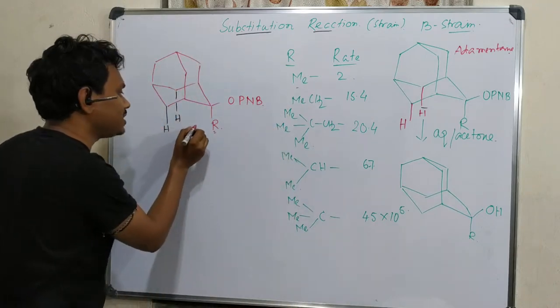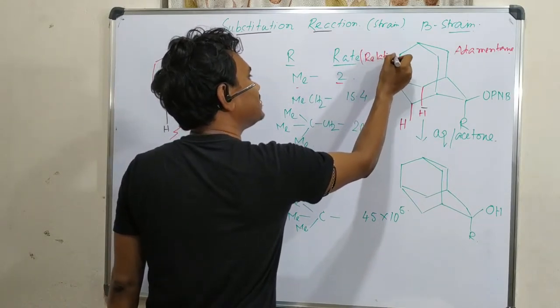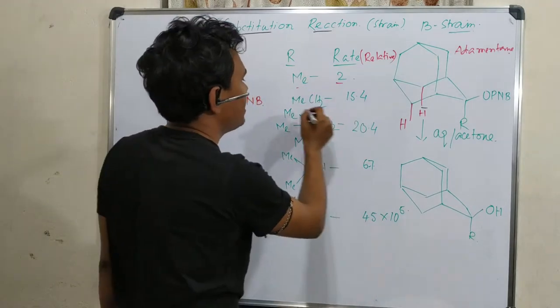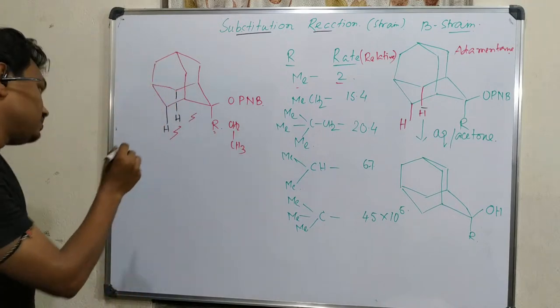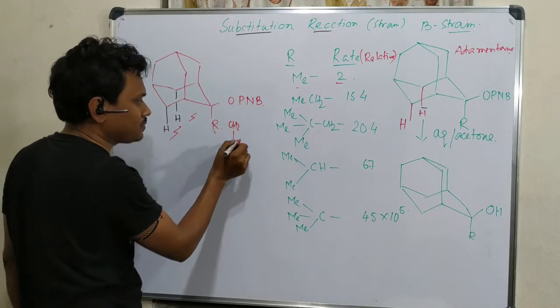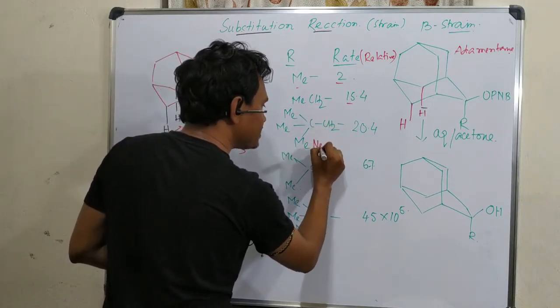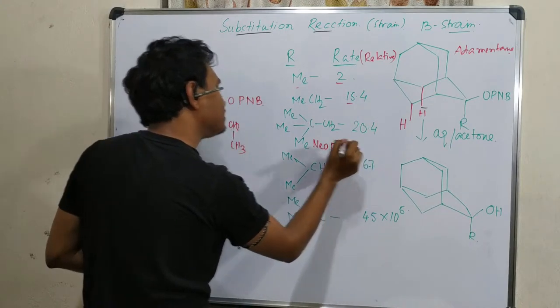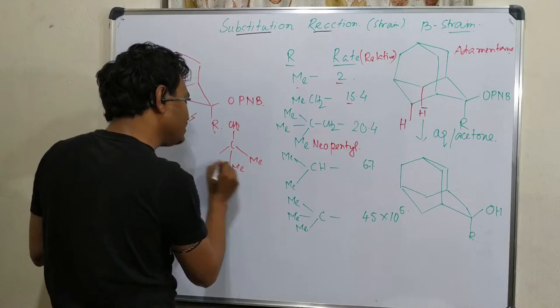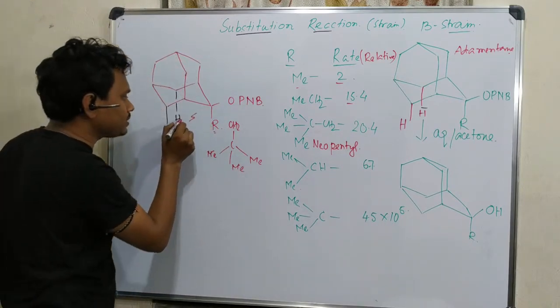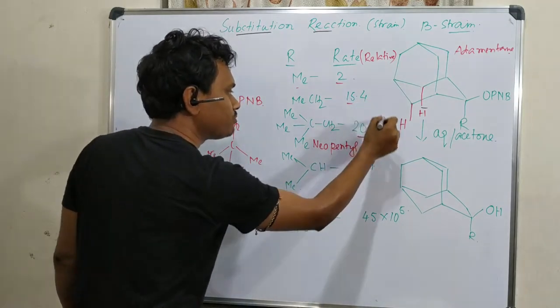So this R has a 1-3 diaxial interaction with this hydrogen. From this, it is expected that if the bulkiness around the R increases, then the stability or ground state stabilization of this molecule will be less. And actually, this is the fact, which you can observe here. When R is equal to methyl, then 1-3 diaxial interaction between this methyl and this two hydrogen, then relative rate is 2. And if instead of methyl, if we consider CH2-CH3, then also there it will improve, enhance, because of this methyl. And enhancing 15.4. When this is neopentyl, this group is actually called neopentyl. When this is neopentyl, means CH2 and tertiary butyl, then also, this hydrogen is parallel to this R, means this methyl. So there is a slight enhancement in interaction. And so the value increases from 15.4 to 20.4.